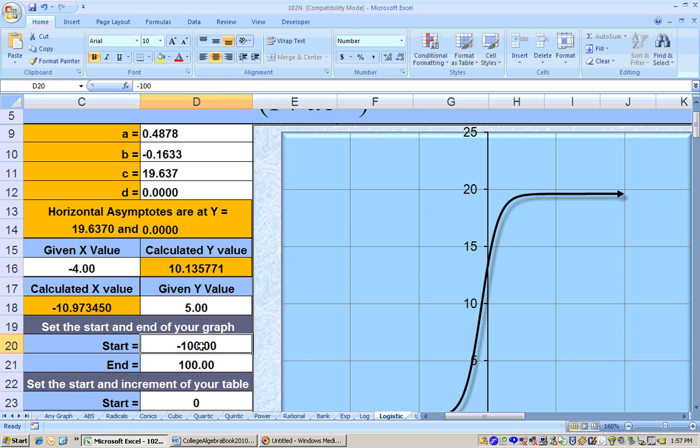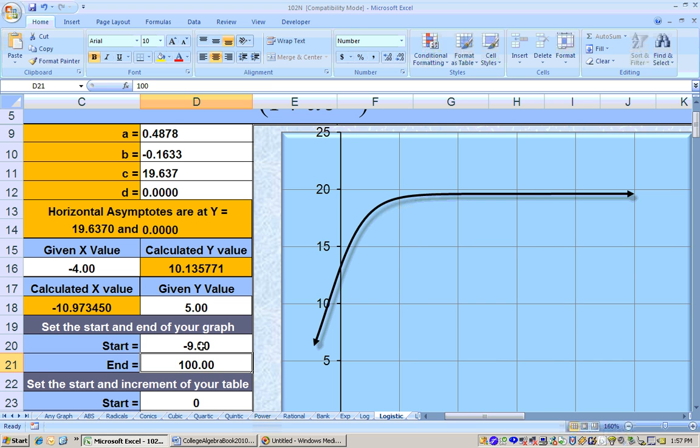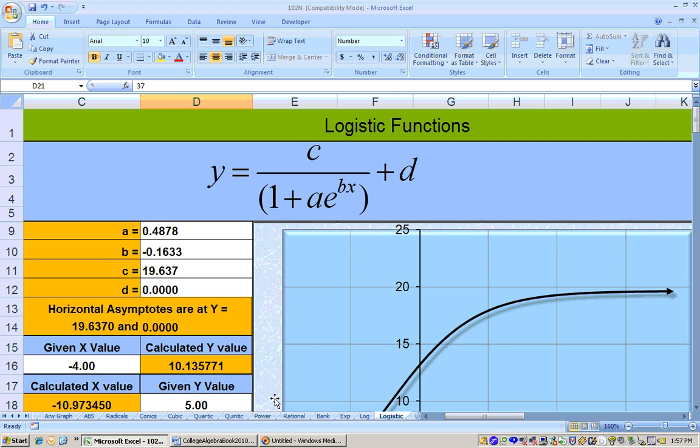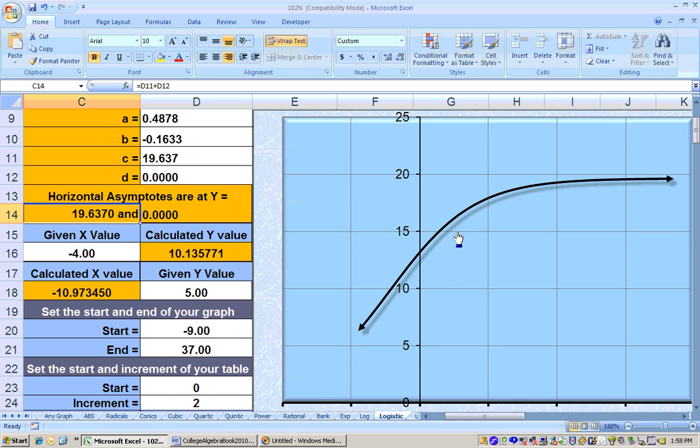You can set your start and end. Let's graph this from negative 9 to 37 or so. That's a little bit more than 3 years old. You can see it goes up and it is leveling off. That's really nice because that's what happens in real life. This says that as the baby gets older and older, its head circumference will level off to 19.637, which is very realistic.